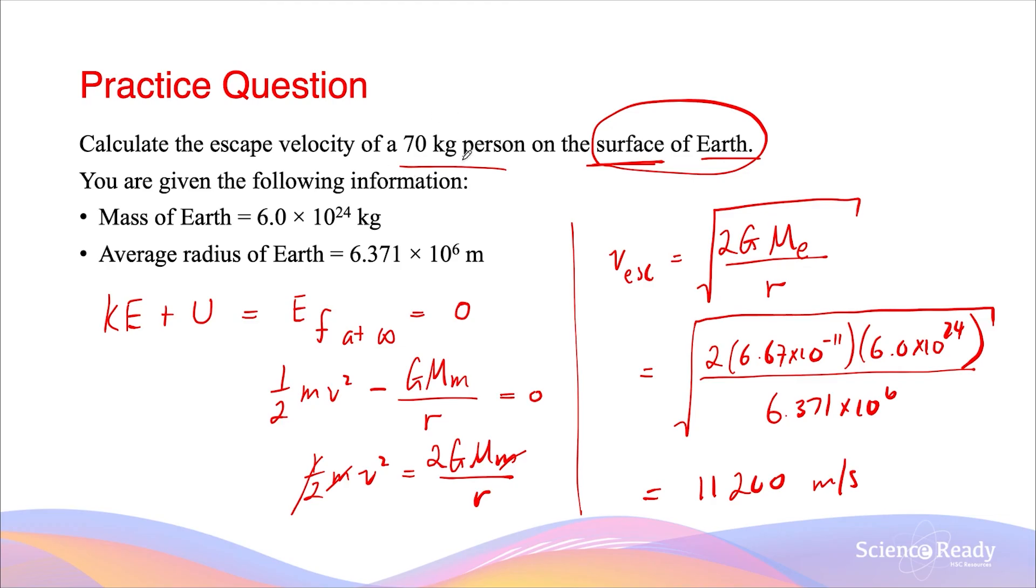If a 70kg person wants to reach the infinity point, this is the initial velocity it must be travelling at. You can see in the working out, I did not use the mass of the person at all. Because the escape velocity is independent of an object's mass. It doesn't matter if this person is 70kg or heavier, and it doesn't matter if it's a rocket that weighs 10 tons. The escape velocity for any mass will be exactly the same as long as the mass of the Earth and the radius are identical.